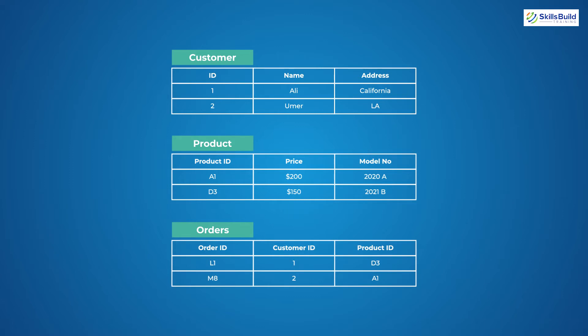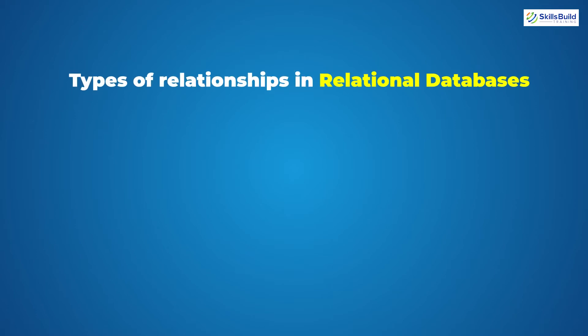What happened here is that we made a relation between different tables using the fields present in those tables. In the orders table we had information from the other two tables — customer and products — but as you can see we used only one attribute of each table. That is the beauty of relational databases.